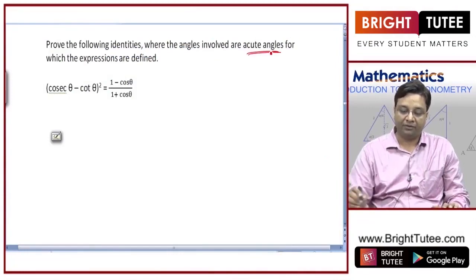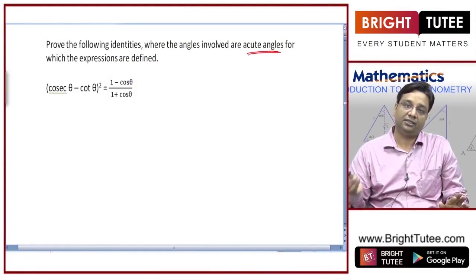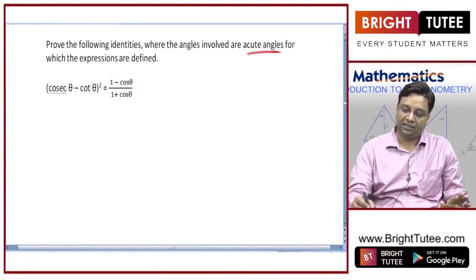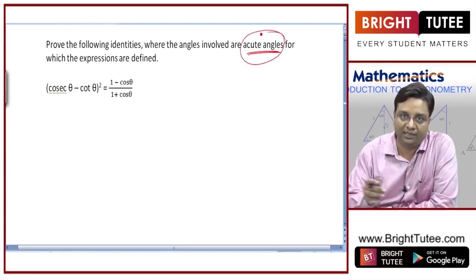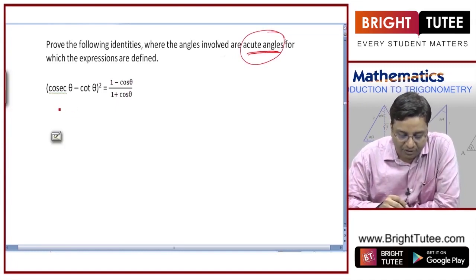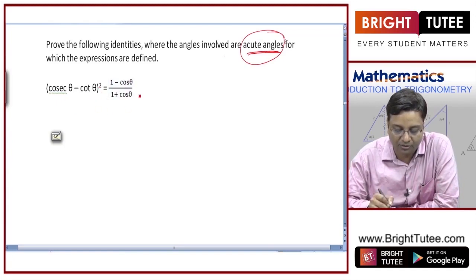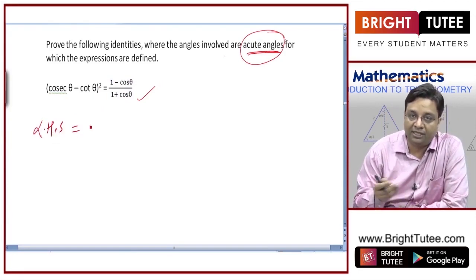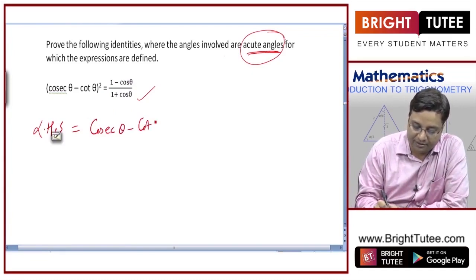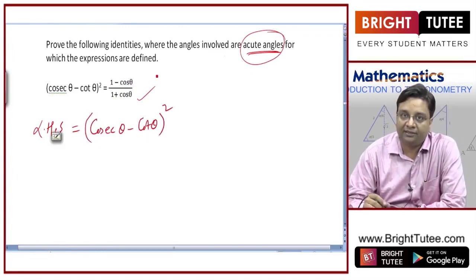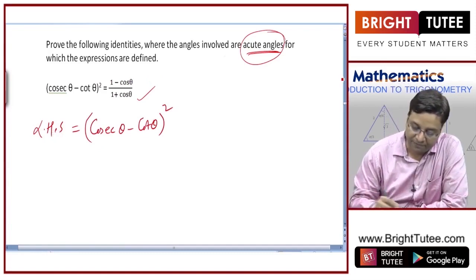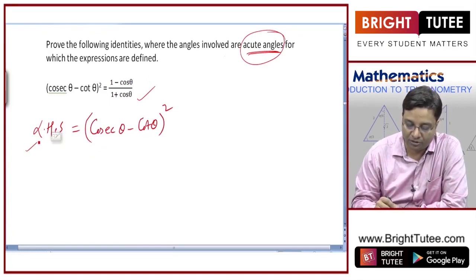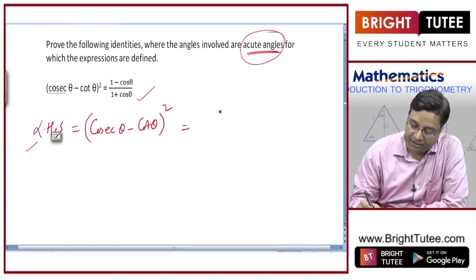Prove the following identities where angles are acute. First: (cosecθ − cotθ)² = (1 − cosθ)/(1 + cosθ). Starting with the left-hand side, write it in terms of sin and cos: (1/sinθ − cosθ/sinθ)² equals (1 − cosθ)²/sin²θ.